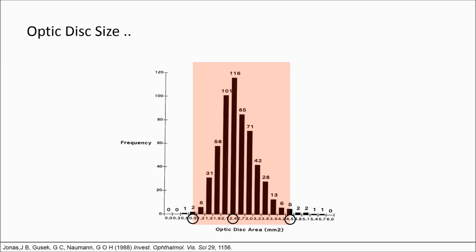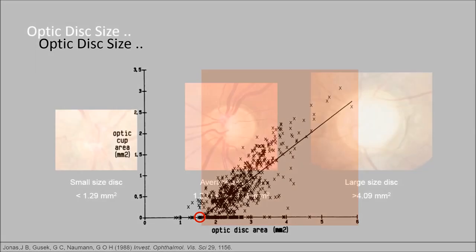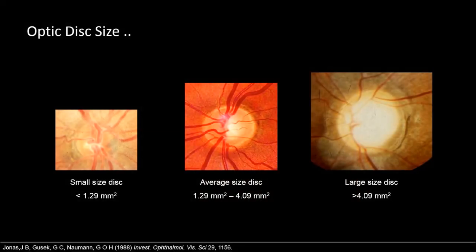Dr. Jonas and colleagues from Germany studied optic disc size in 450 normal subjects in 1988. The majority had a disc size of 2.4 mm². Outside the standard deviation, any size below 0.9 mm² was a small disc, and any disc larger than 4.5 mm² was considered a large optic disc. The study showed a correlation between disc size and cup size, concluding that if the disc size is smaller than 1.5 mm², the presence of a cup may be unusual. There is a fixed number of nerve axons — around 1.2 million — passing through the optic foramen. If the opening is large, there will be room left in the middle resulting in a large cup; if the opening is small, all fibers will be crowded with no or a very small cup. So if you see a small optic disc with an obvious cup, it may be pathological.